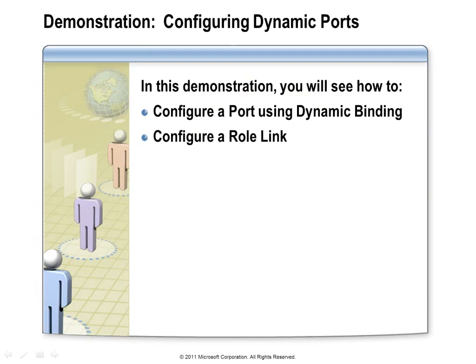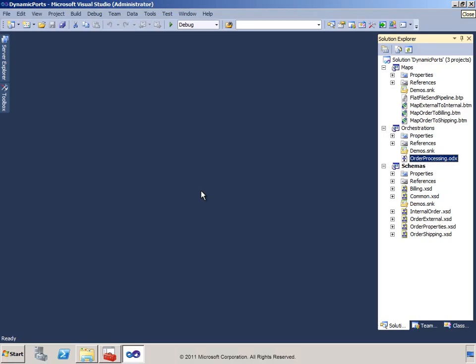In this demonstration, I will walk you through an orchestration that makes use of dynamic addressing to send an email, and also uses a role link to specify which shipping company should be used to deliver an order. In the BizTalk Administration Console, I will show you the configuration for each of the parties and how they are associated with the role link. We're going to concentrate on the order processing orchestration and look at how it uses dynamic binding and role links to route messages to the correct destination.